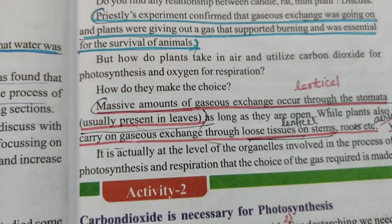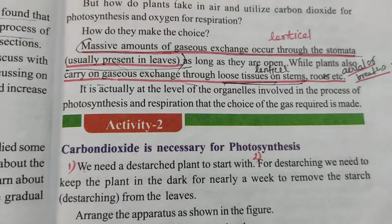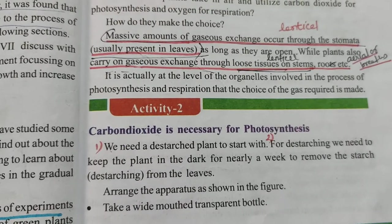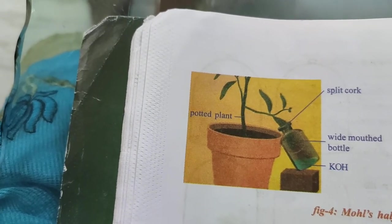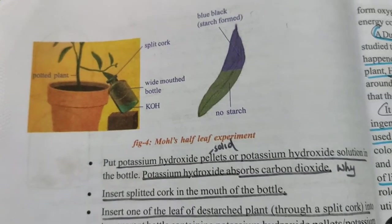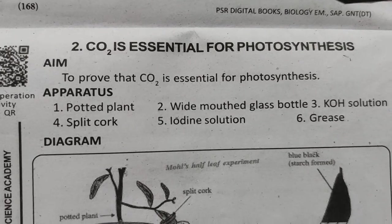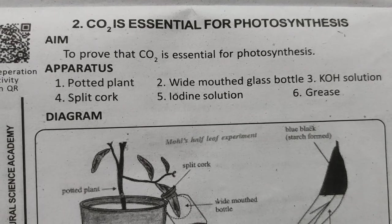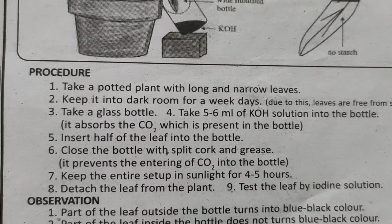Another important experiment: to prove that carbon dioxide is essential for photosynthesis. Apparatus: potted plant, wide-mouth glass bottle, KOH solution, split cork, iodine solution, and grease.